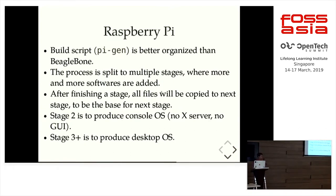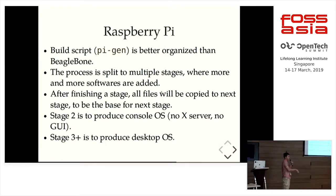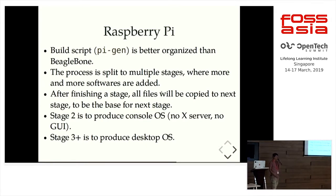Because QEMU cannot emulate the ARM processor fully, my build script cannot run in QEMU because it uses some system calls that QEMU does not support. The Raspberry Pi build script is better organized than BeagleBone because it goes through multiple stages. You build each stage, then move to the next stage. When you make a change in one stage, you just rebuild that stage — you don't have to go all over again. So it saves you a lot of time.